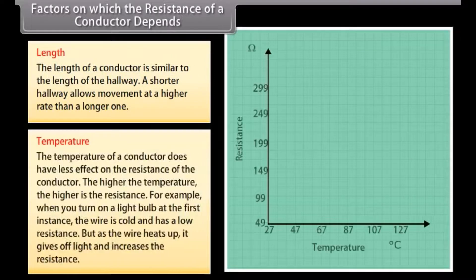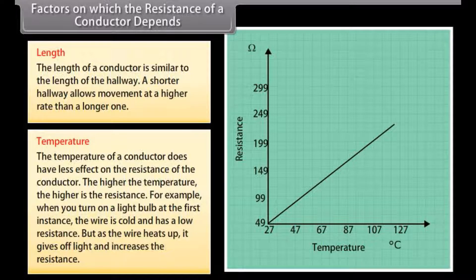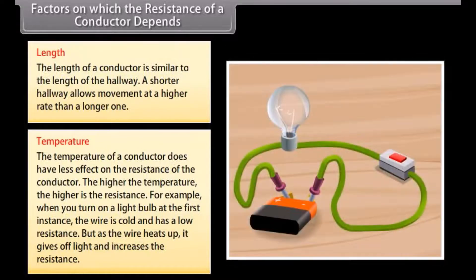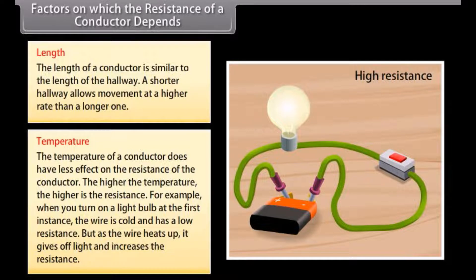The temperature of a conductor has a significant effect on its resistance. The higher the temperature, the higher the resistance. For example, when you turn on a light bulb, the wire is initially cold and has a low resistance, but as the wire heats up, it gives off light and the resistance increases.